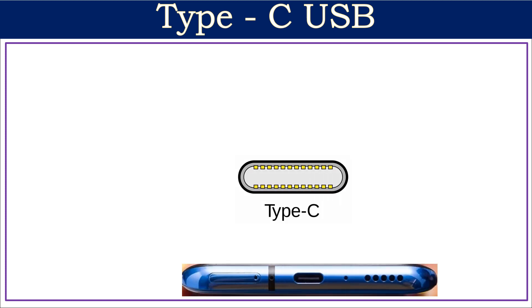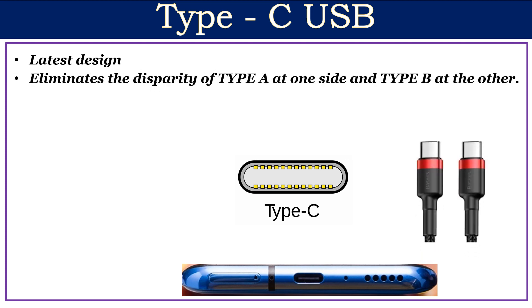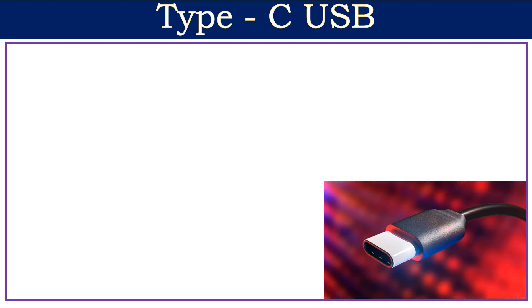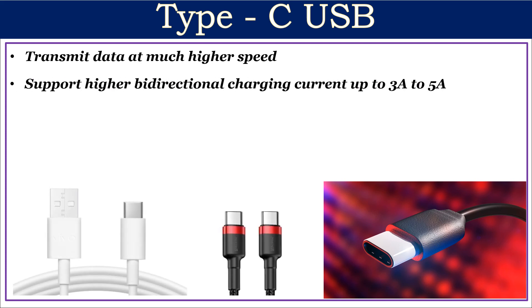Type C USB has the latest design, which eliminates the disparity of Type A on one side and Type B on the other. A user can plug in a Type C USB connector without worrying which side is up or down — that means it supports reverse insertion. Type C USB can also transmit data at much higher speeds compared to Type A or Type B USB.